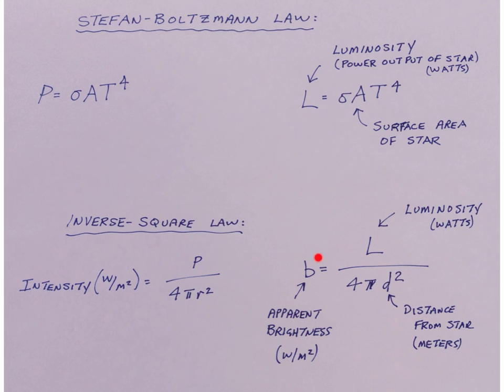So the apparent brightness of a star at a distance d from the star is equal to the star's luminosity measured in watts, divided by 4 pi times the distance from the object squared. The distance has to be in meters.